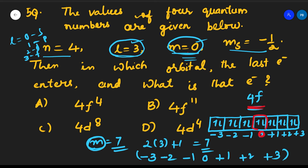The 4th electron in 4f has ms=+½ and the 11th has ms=−½. Since ms=−½ is given, the answer is 4f¹¹. Option B is the correct answer. This is how we determine which orbital a given electron enters based on all four quantum numbers.